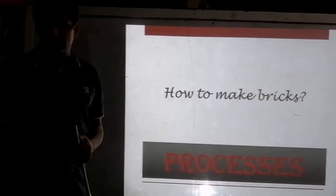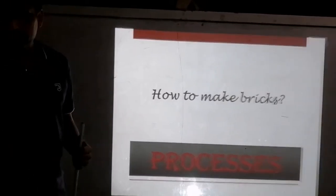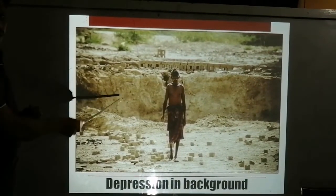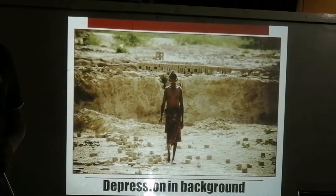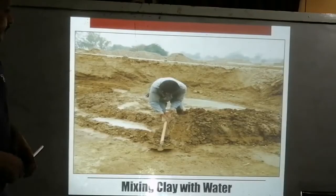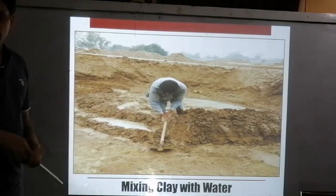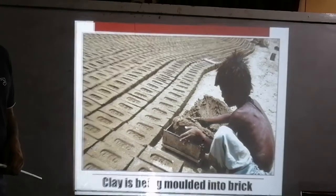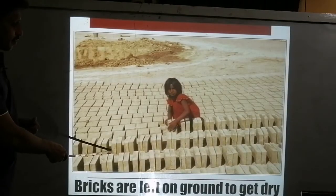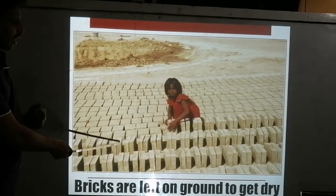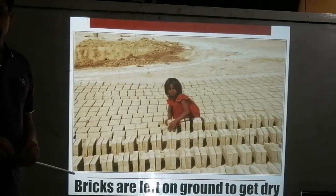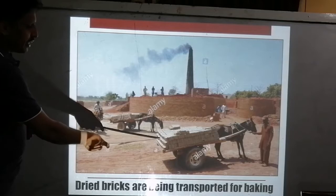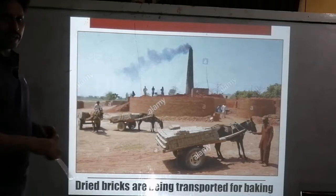The brick making process begins with clay obtained from the ground — you can see the depression in the background where clay has been extracted. The clay is mixed with water and then molded into bricks. These bricks are then left on the ground to dry under sunlight.